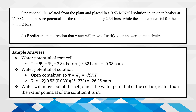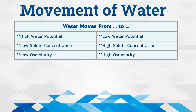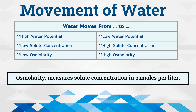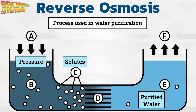Here's just a little summary of ways that water moves that are specifically mentioned in the AP Biology course and exam description. Water moves from areas of high water potential to low water potential, low solute concentration to high solute concentration, and low osmolarity to high osmolarity. Osmolarity is another way of measuring solute concentration, so saying water moves from low to high osmolarity is basically the same as saying water moves from low to high solute concentration.